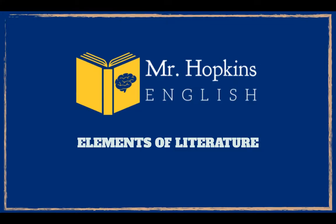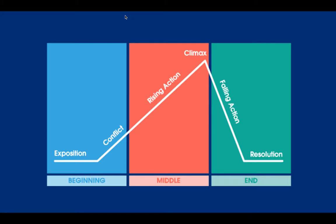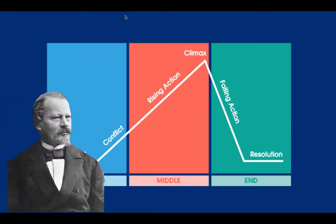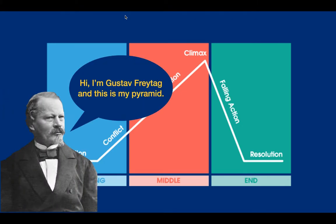Hey guys, in this Elements of Literature video, I'll be talking about plots. I am sure you have seen this diagram before — it's taught in 5th grade, again in 6th grade, again in 7th, 8th, 9th, and 10th. It's taught every year. And it's known as Freytag's Pyramid.